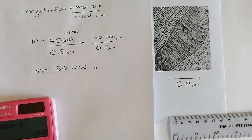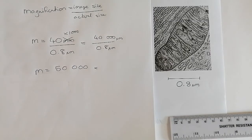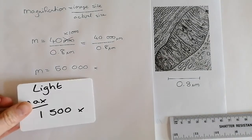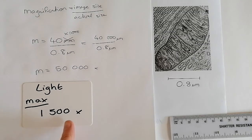And I've got a magnification of 50,000. Now, knowing what we know about microscopes, let's have a look to see if that looks reasonable. So light microscopes can zoom in 1,500 times. So it can't be a light microscope.